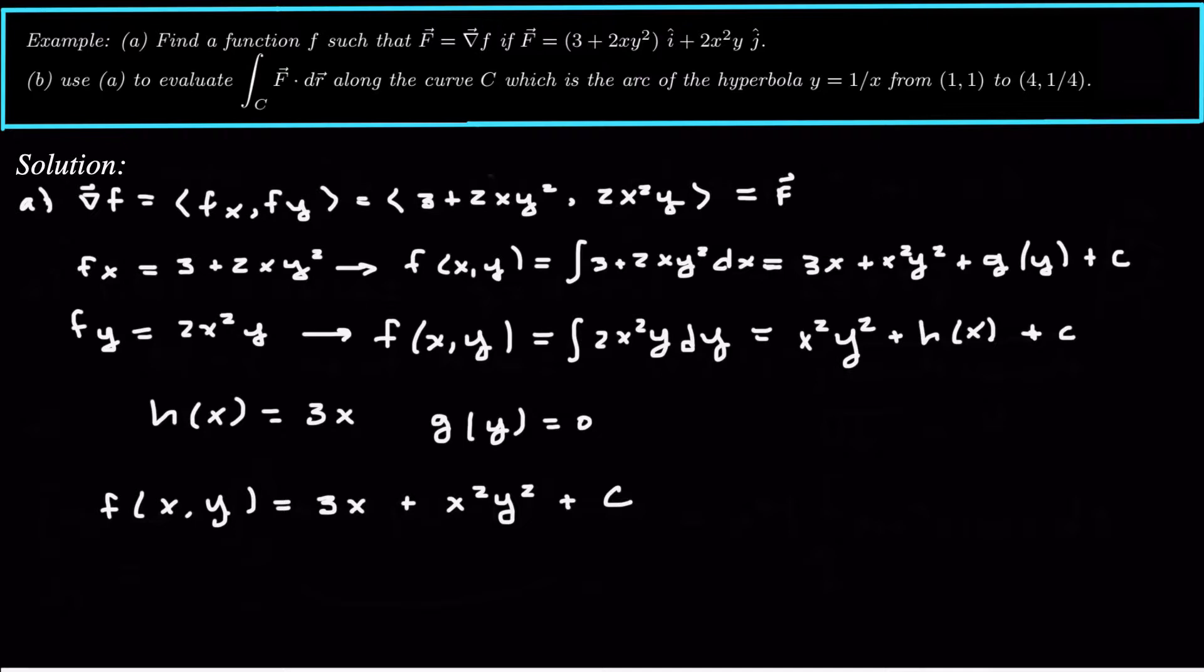And that is good enough for part a because we don't necessarily need to know what the constant is. If we were given some point that we could plug in, we could figure out what the constant is. But we don't have that. So we'll just stop right there and say that's our function, 3x plus x squared y squared.